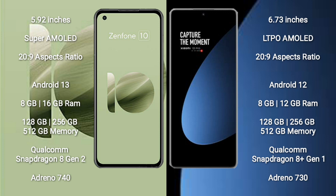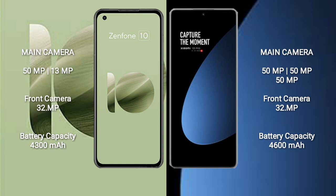The Xiaomi 12s Pro comes with 8GB or 12GB RAM and 128GB, 256GB, or 512GB internal storage, powered by the Qualcomm Snapdragon 8 Gen 1 processor and Adreno 730 GPU. The Asus Zenfone 10 features a dual rear camera setup: 50MP plus 13MP, and a 32MP front camera.